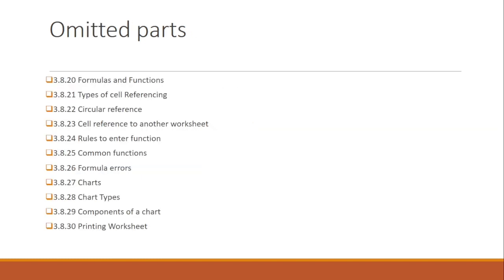From Excel, some parts are omitted. The complete chapter on formulas and functions is not required, so you can skip that part — including formula and function types, types of cell referencing, etc. Skip this part for your examination.